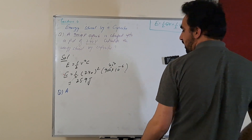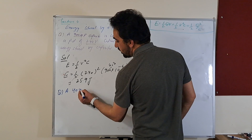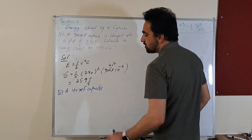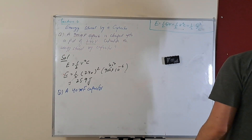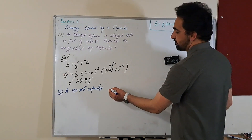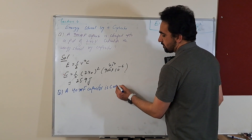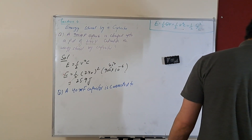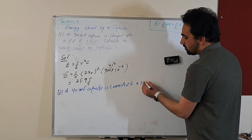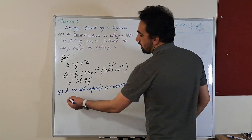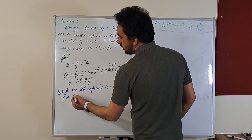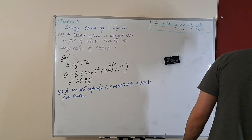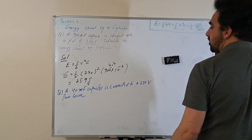A 40 millifarad capacitor — milli is 10 to the power minus 3 and micro is 10 to the power minus 6 — is connected to a 230 volt power source. When fully charged, how much energy will be stored by the capacitor?